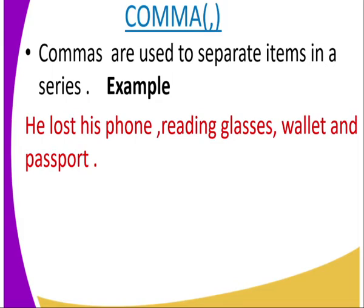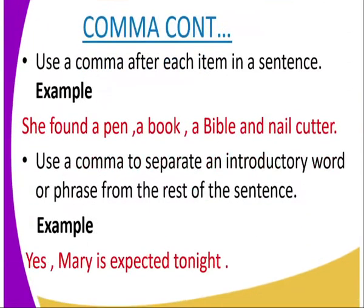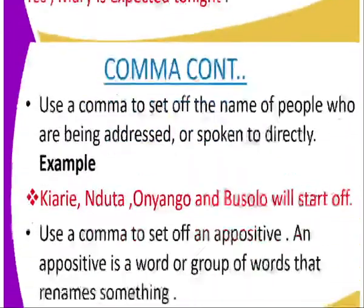Commas are used to separate items in a series. For example: 'He lost his phone, reading glasses, wallet, and passport.' We place our comma in between the items listed. We also use a comma after each item in a sentence. For example: 'She found a pen, a book, a bible, and a nail cutter.' A comma is also used to separate an introductory word or phrase from the rest of the sentence. For example: 'Yes, Mary is expected tonight.'